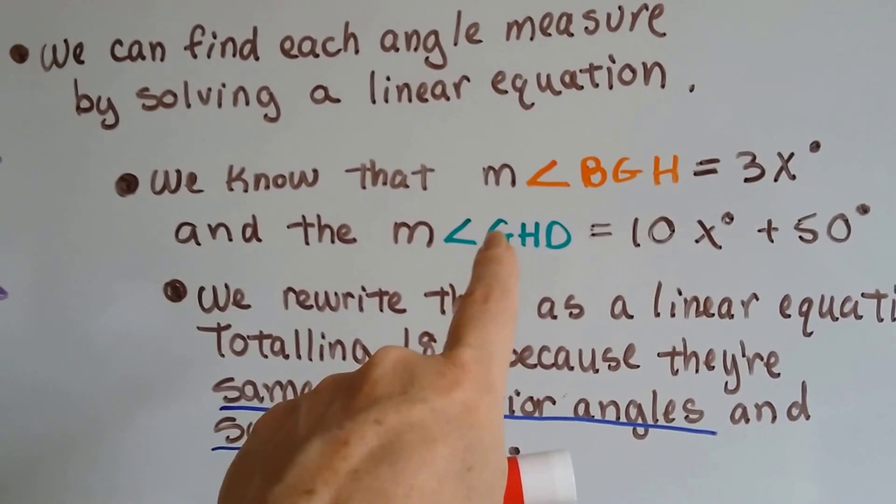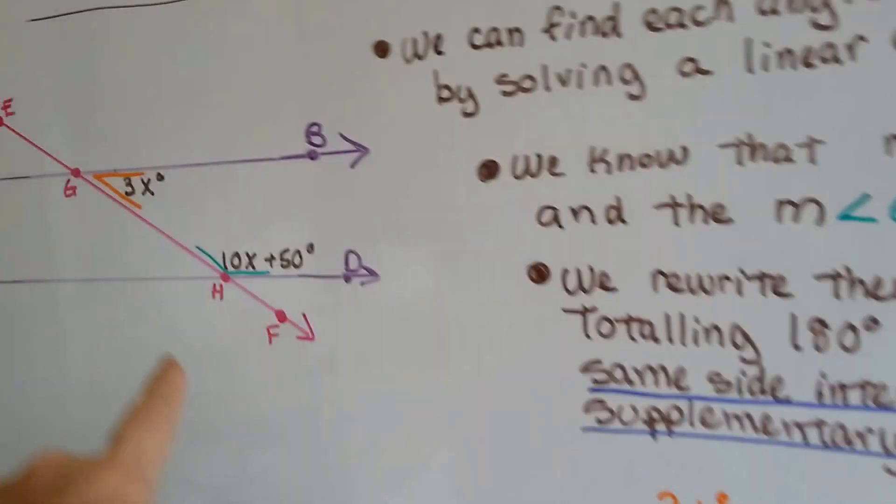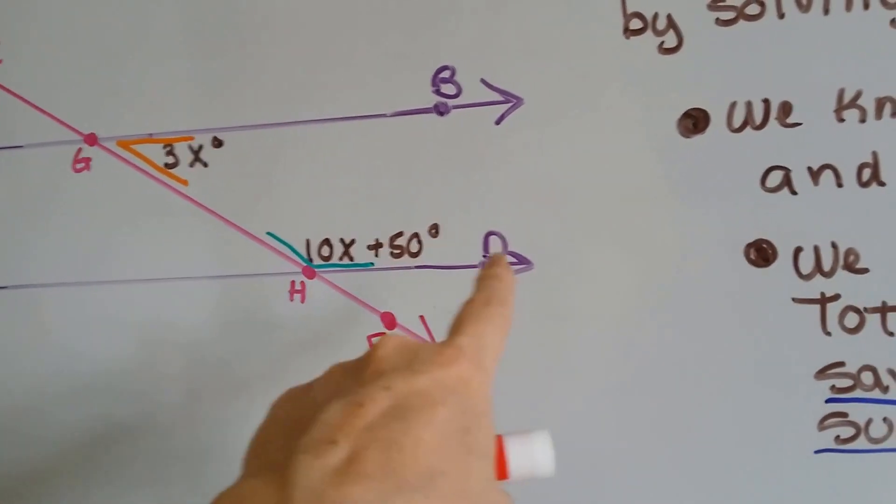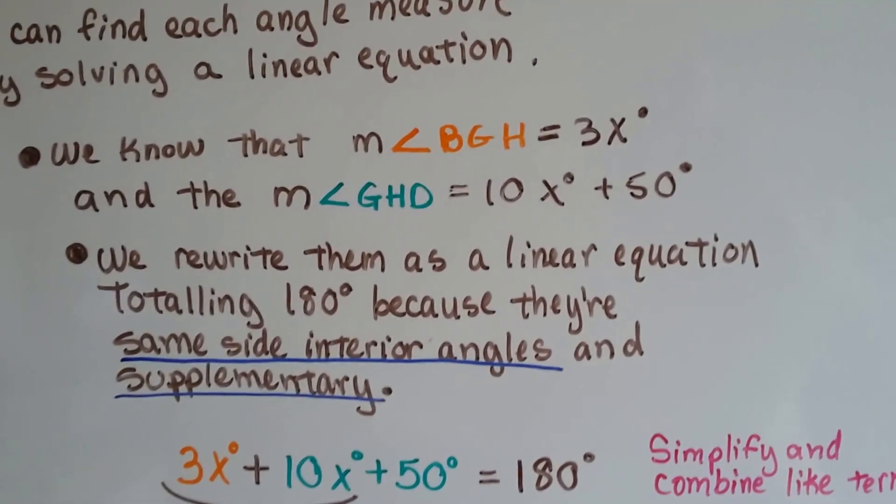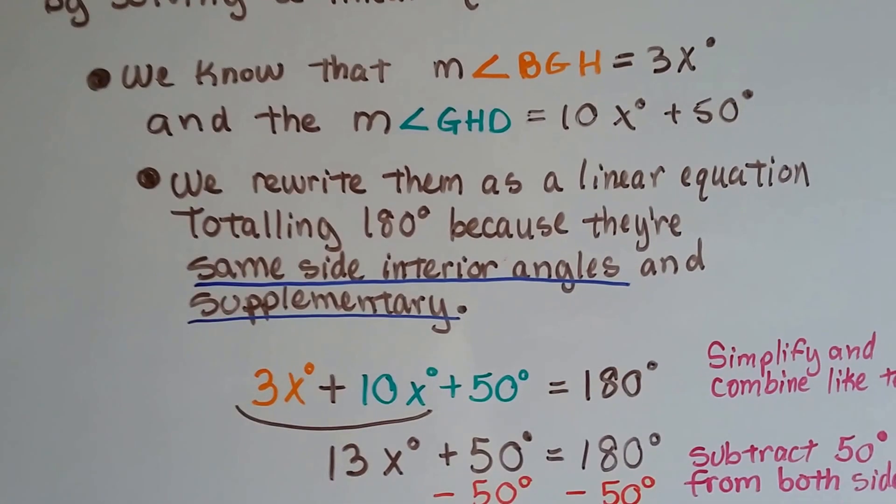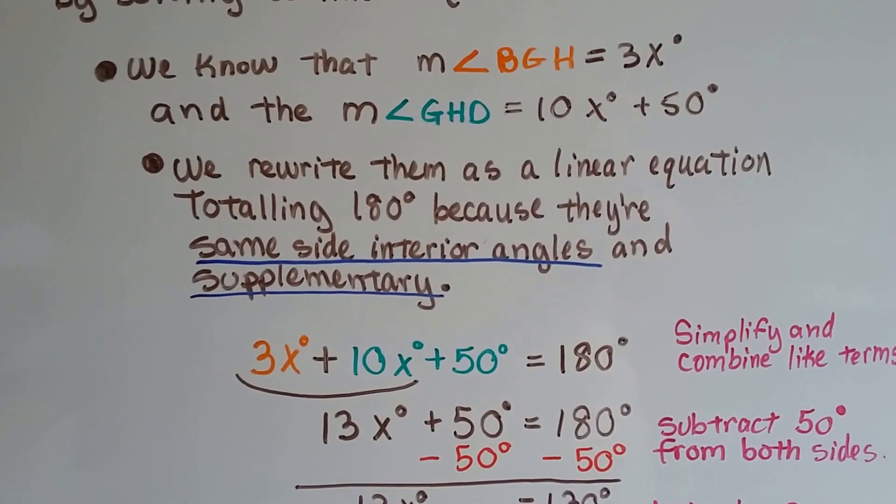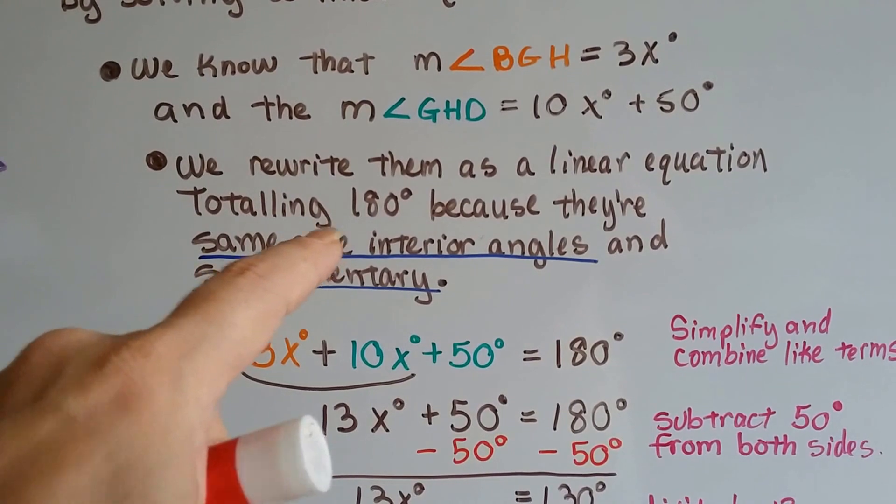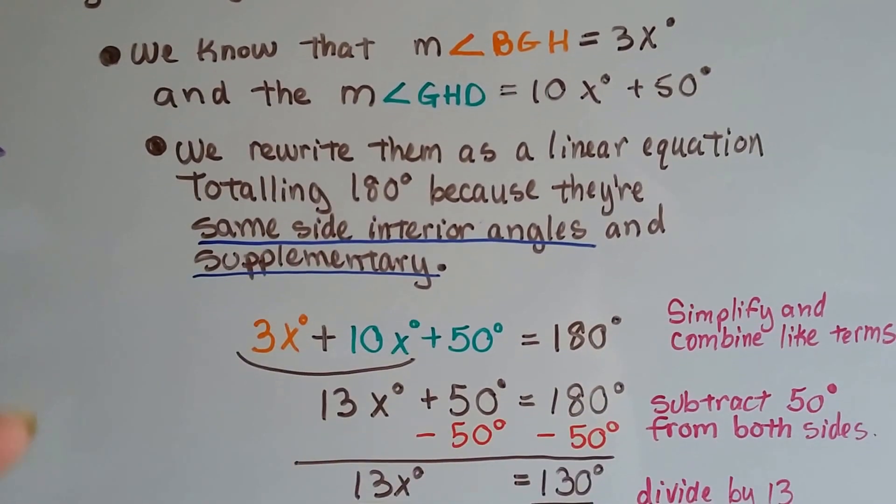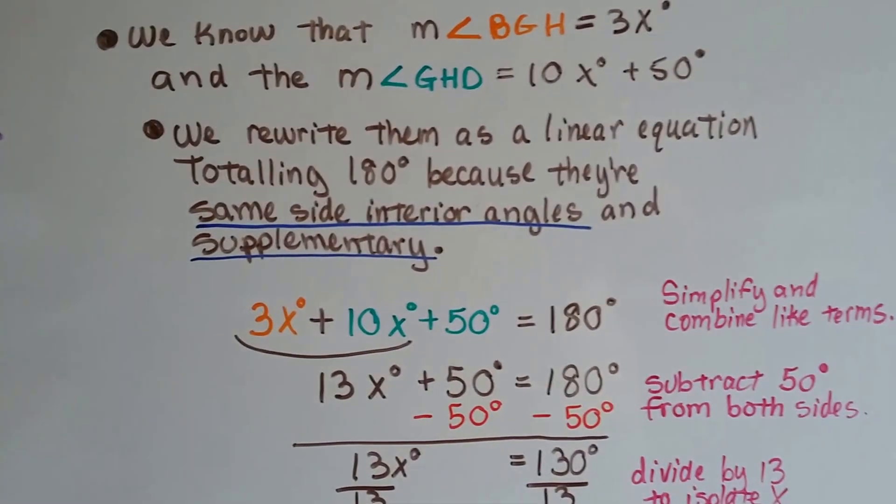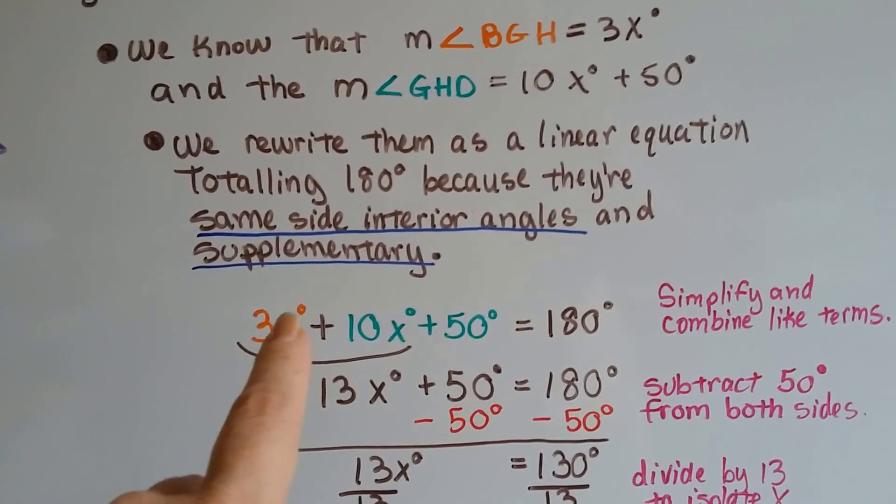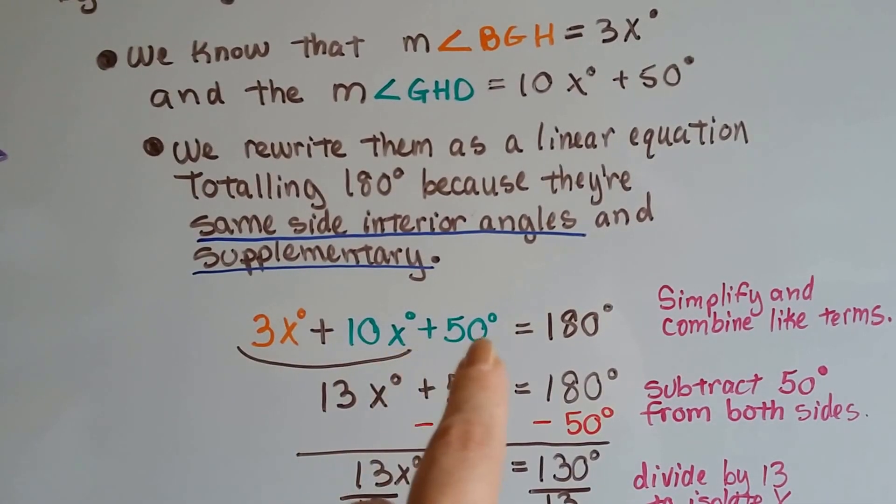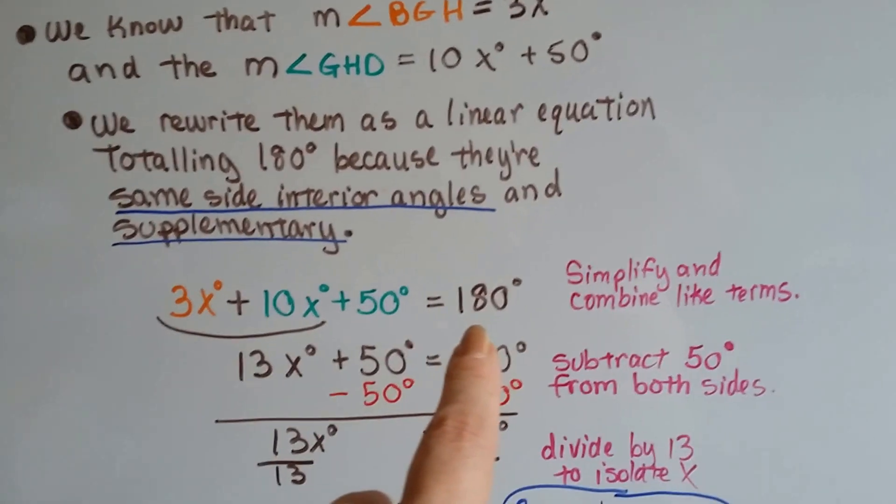And the measure of angle GHD is 10x degrees plus 50 degrees. We rewrite them as a linear equation totaling 180 degrees. So we have 3x degrees plus 10x degrees plus 50 degrees, and that's going to equal 180 degrees.